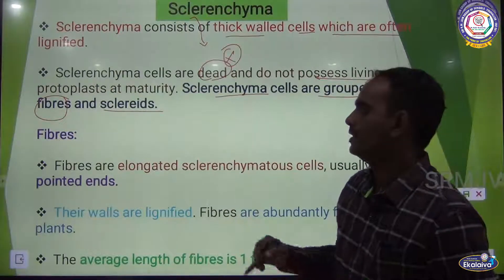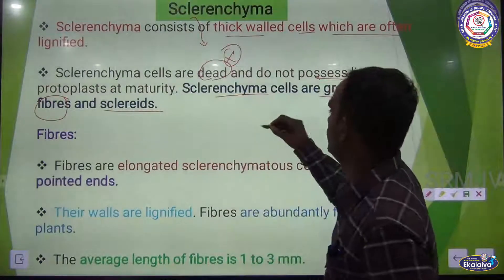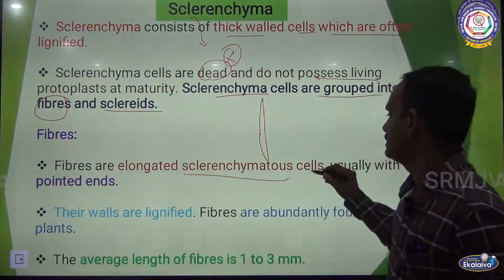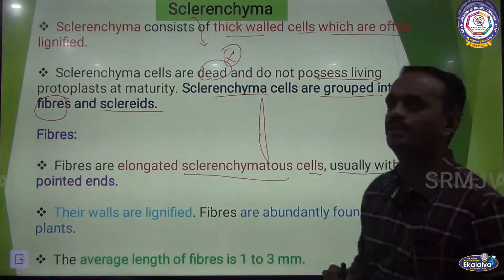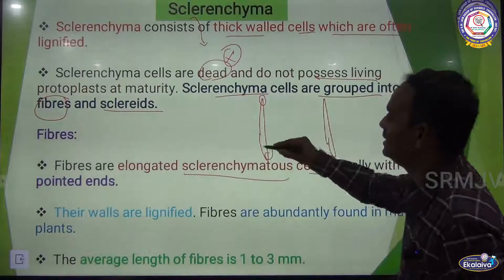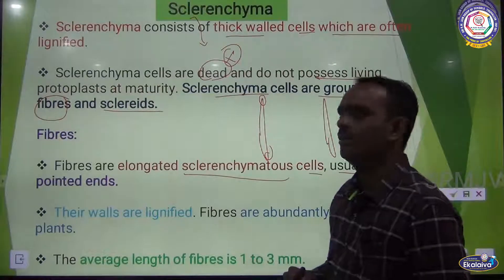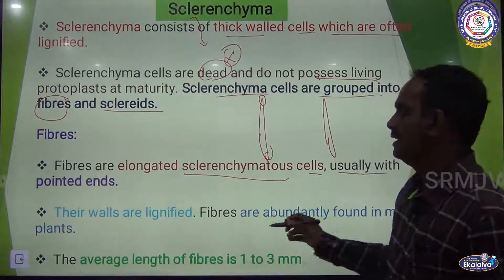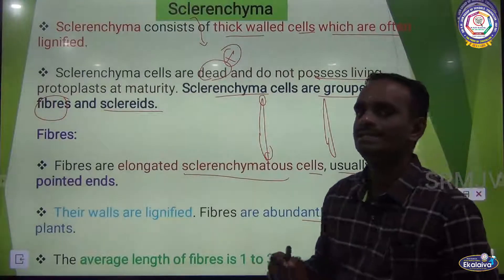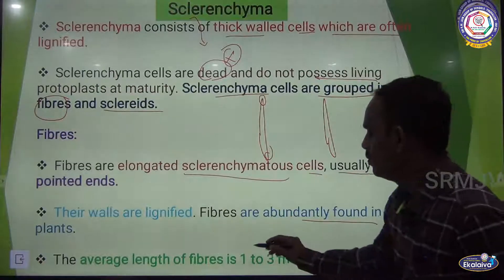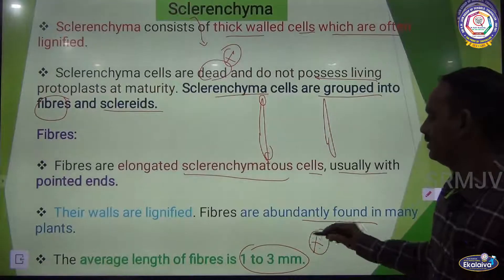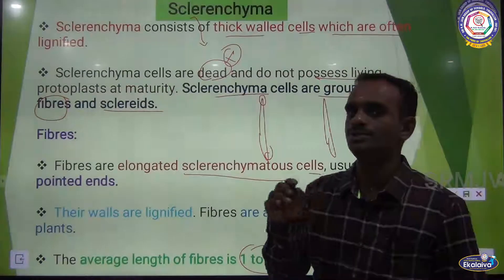Fibers are elongated sclerenchyma cells with pointed ends. Their walls are lignified, and fibers are abundantly found in many plants. The average length of the fiber is 1 to 3 millimeters — very important.